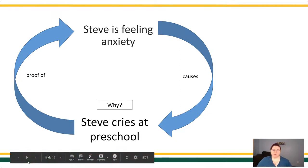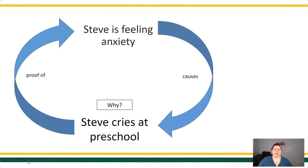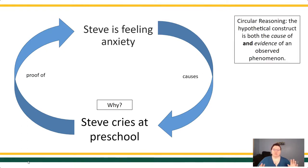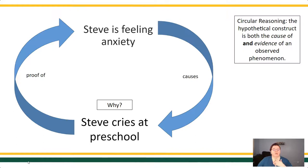Returning to our description of circular reasoning, I want to make sure that I'm very clear that when we're talking about circular reasoning or circular logic, what I mean is that it's the situation where the hypothetical construct or the private event is considered both the cause of and evidence of an observed phenomenon.